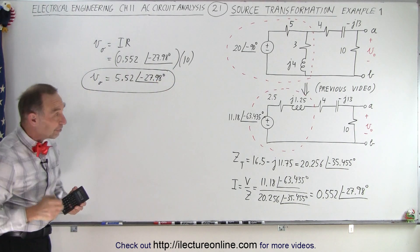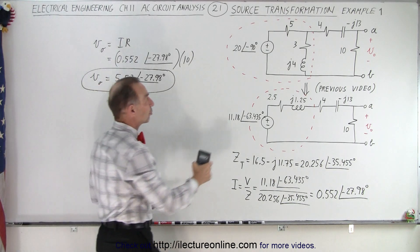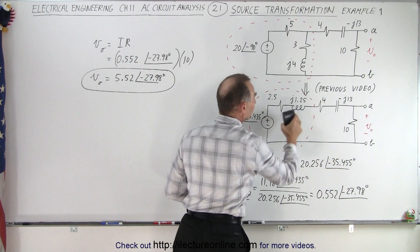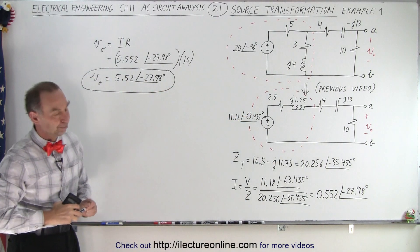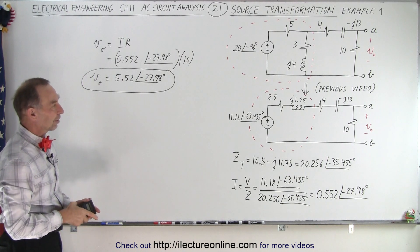So, you can see that there's definitely an advantage in using source transformation. Because that way, we can take a circuit that looks much more complicated like this and turn it into something that looks a lot simpler. Is it the best method? Can you do it other ways? Of course, there's so many different ways in which you can solve that circuit.